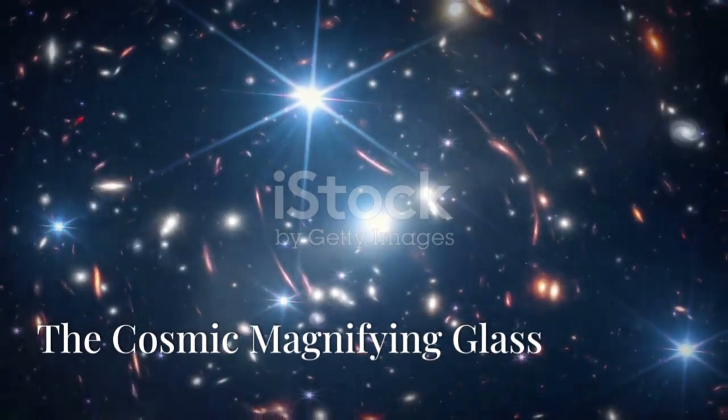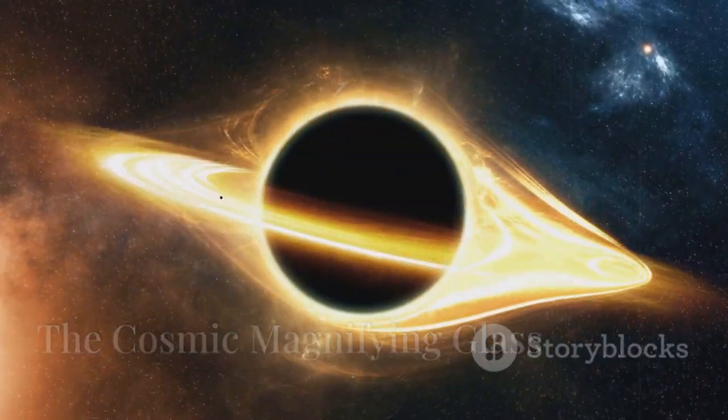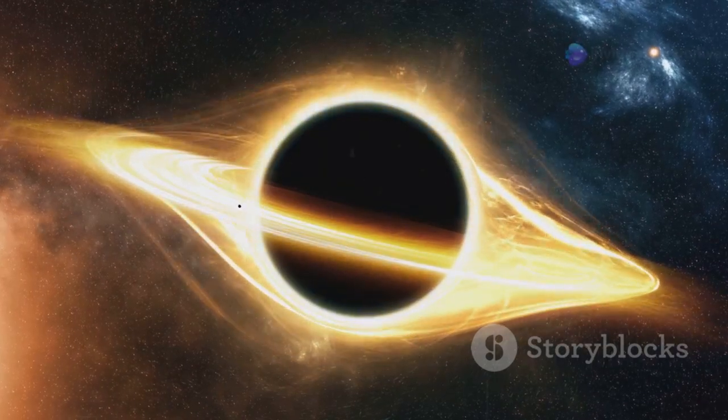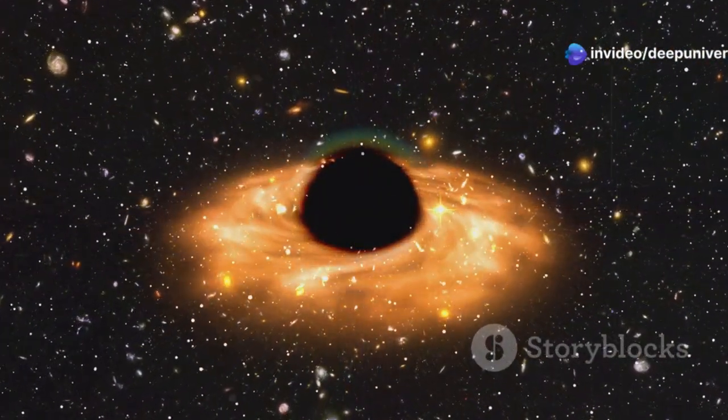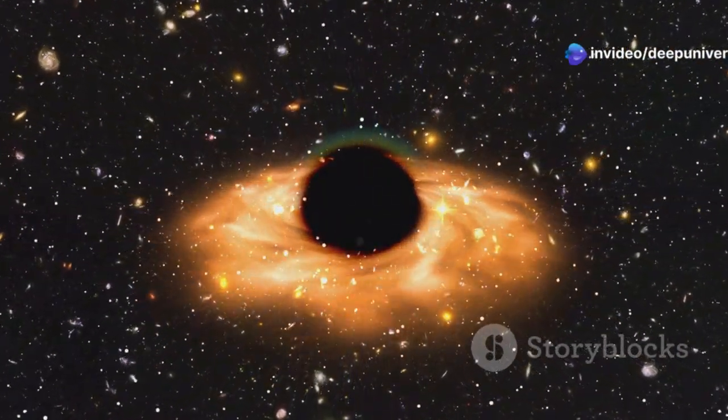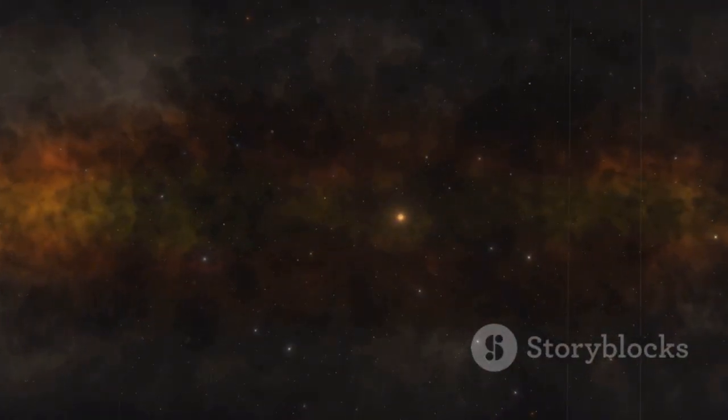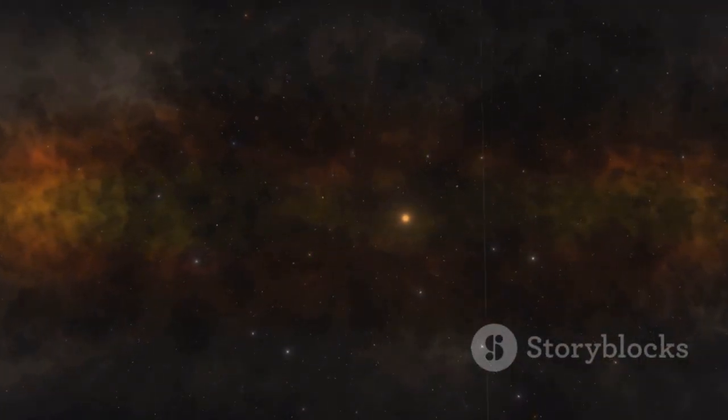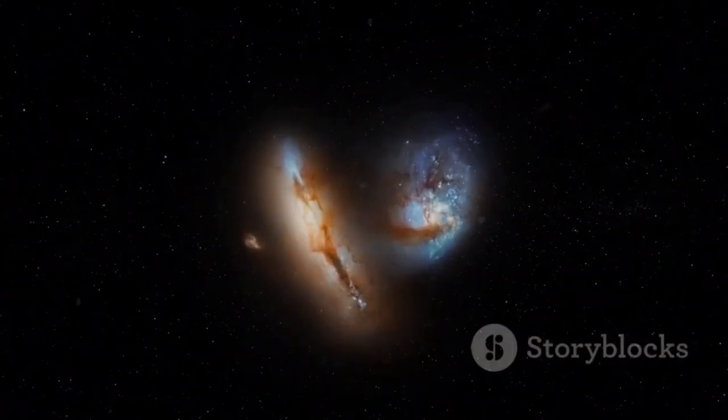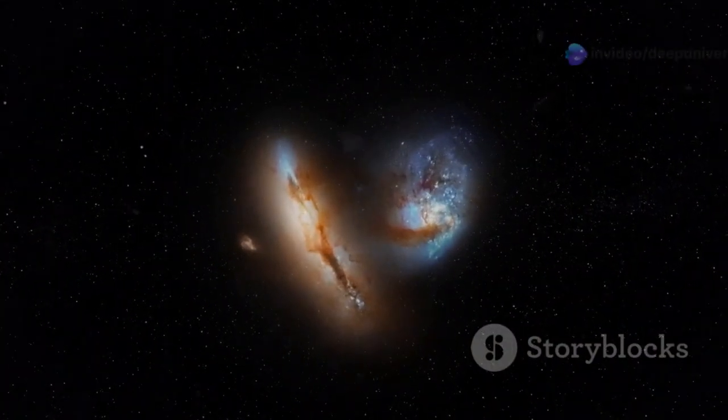The Cosmic Magnifying Glass. Gravity not only warps space-time, but it can also bend the path of light. This bending of light by massive objects is called gravitational lensing. When light from a distant object passes by a massive object, such as a galaxy cluster, its path is bent. This creates a magnified and distorted image of the distant object.